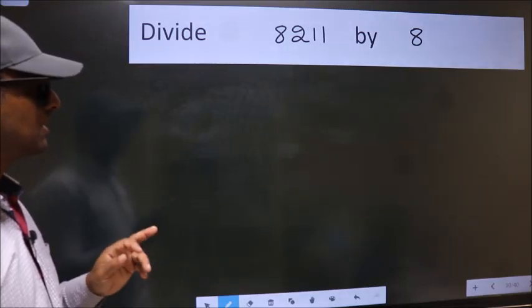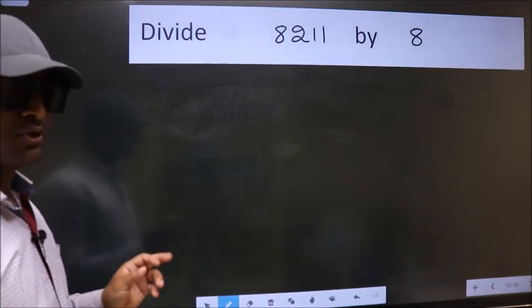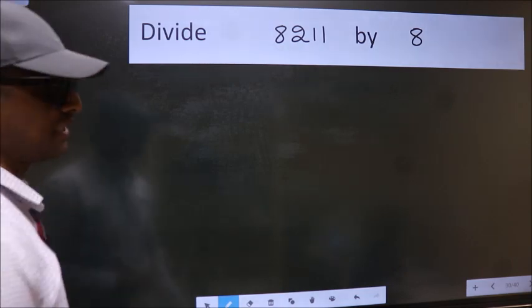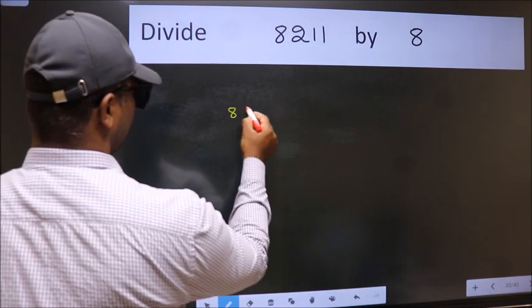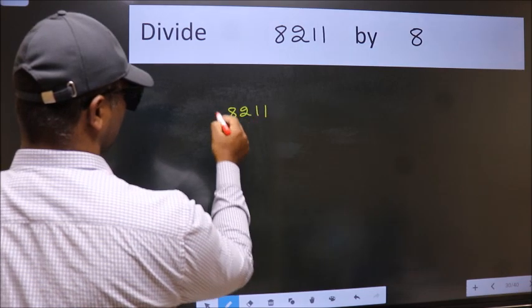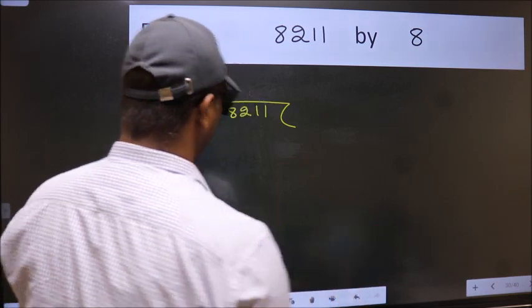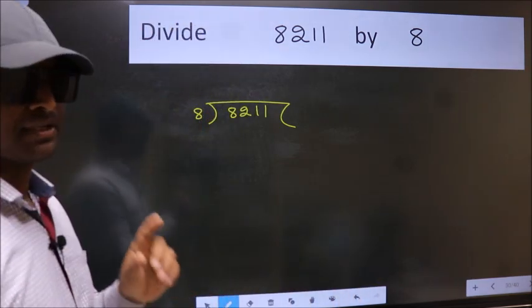Divide 8211 by 8. To do this division, we should frame it in this way. 8211, 8 here.